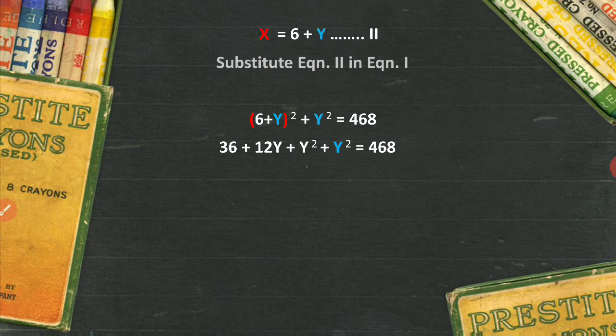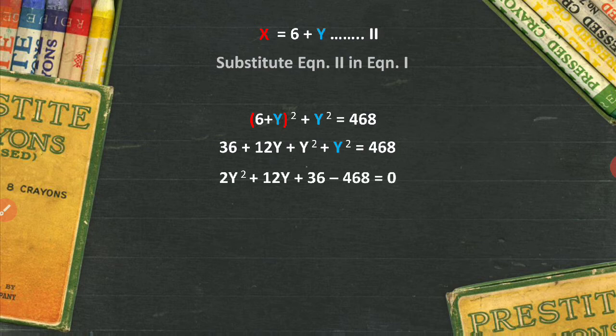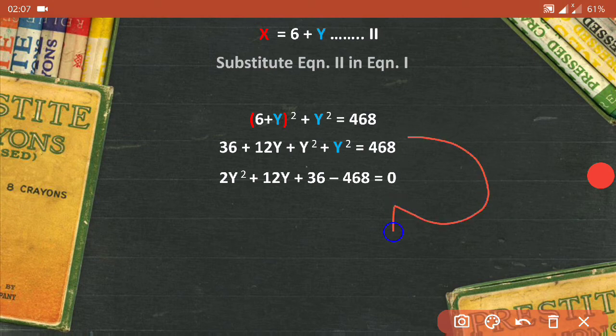Plus the y² that was already there outside the bracket is equal to 468. So adding the same terms would become y² plus y² will become 2y² plus 12y as it is. 36 plus 12y plus y² plus y² = 468.